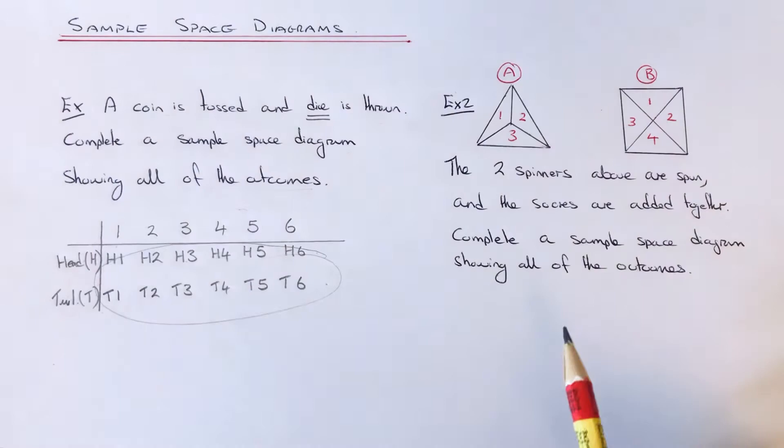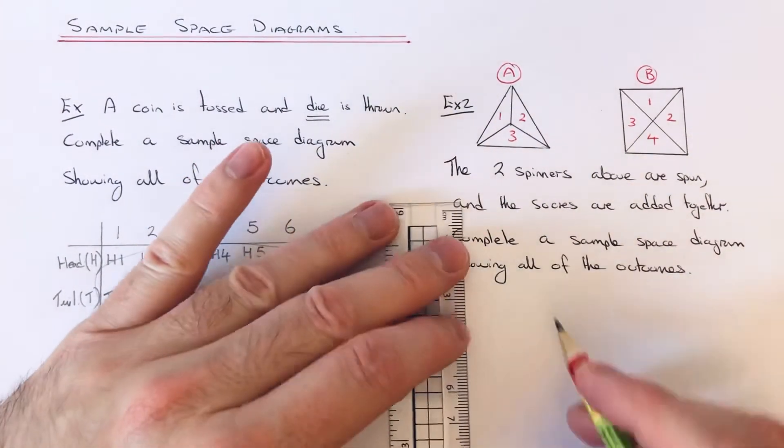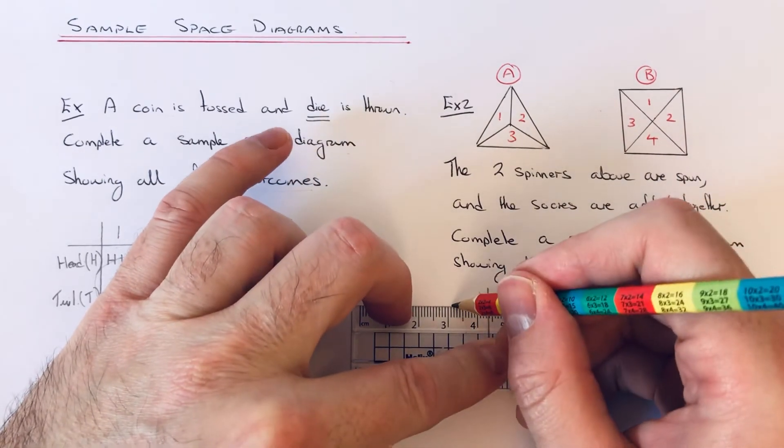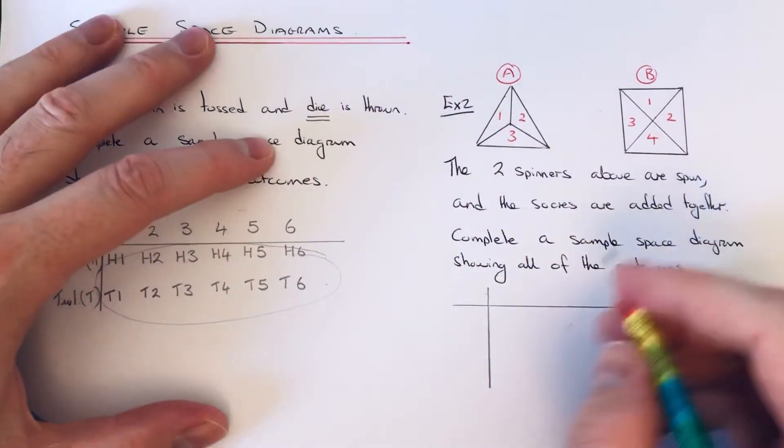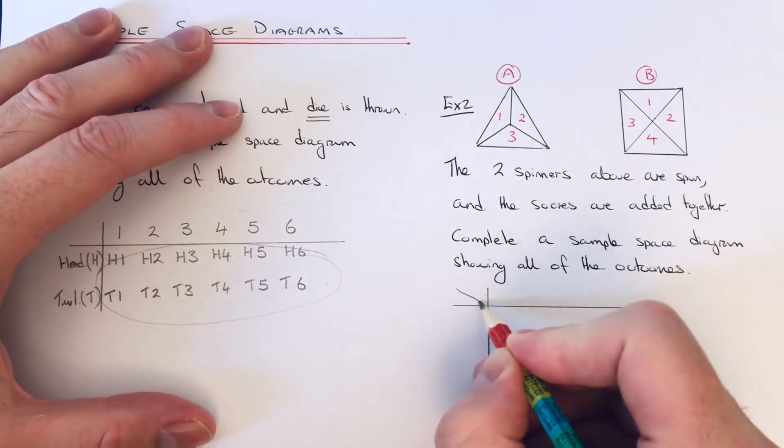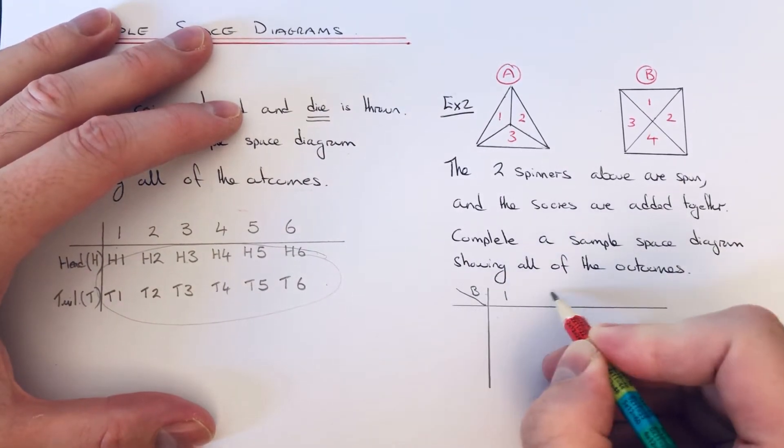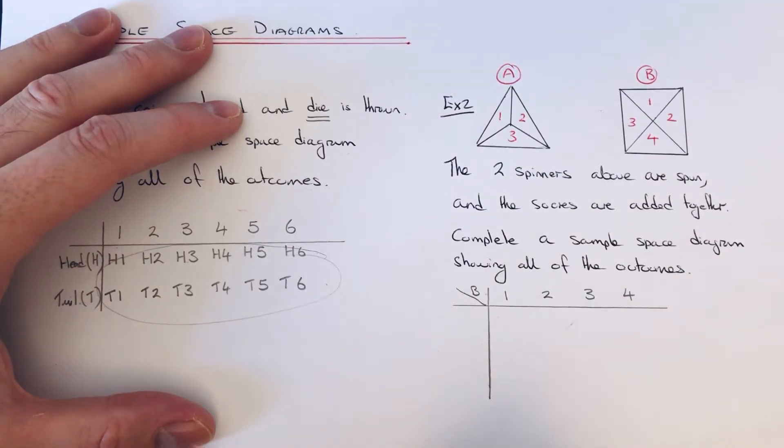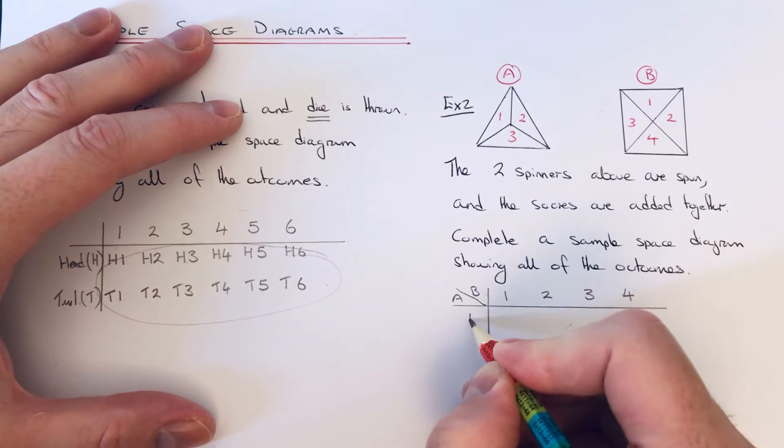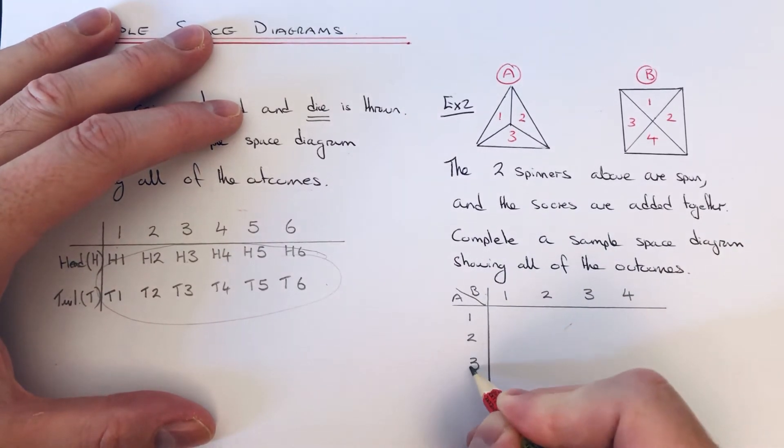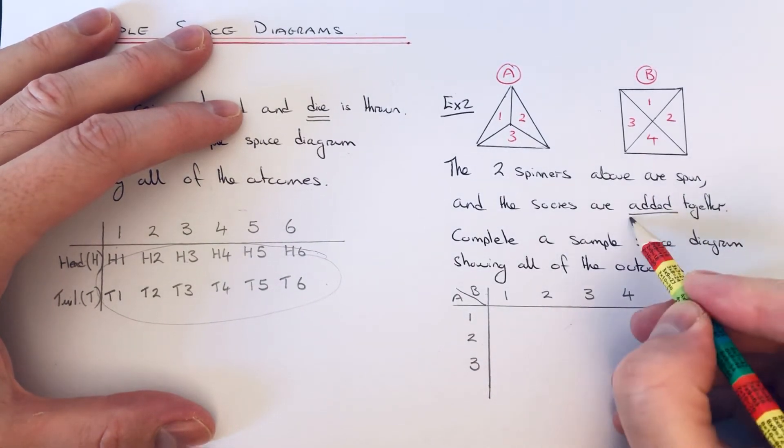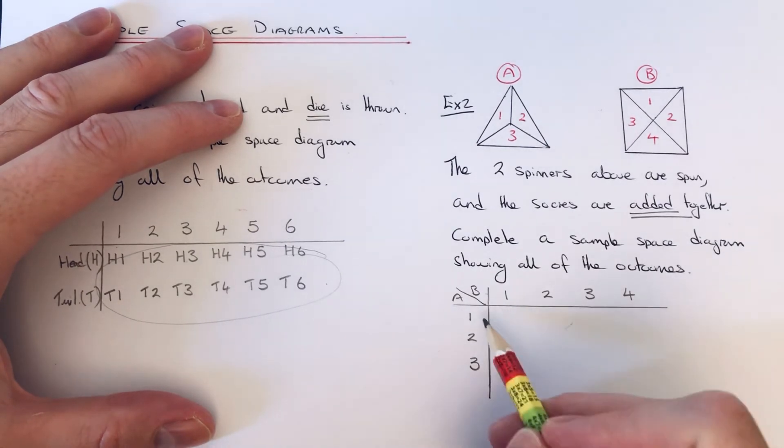I'm going to put spinner B across the top - you could put it down the side if you want, it makes no difference. I'm going to put spinner A down the side. What we're doing this time is adding the scores together. Sometimes they might be multiplied, so just be careful. So 1 add 1 is 2, 1 add 2 is 3, 1 add 3 is 4, 1 add 4 is 5.